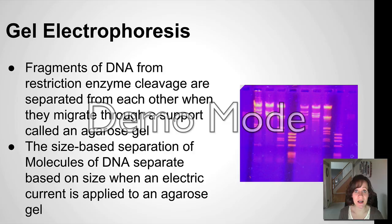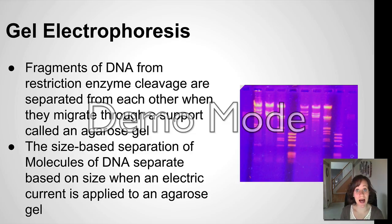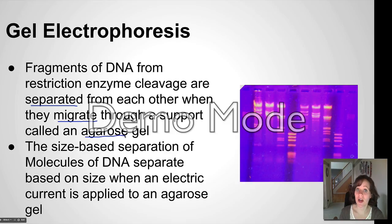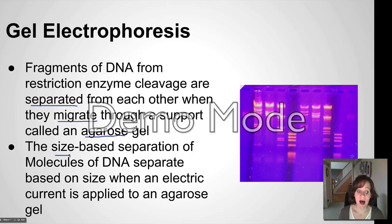Once we cut the DNA, the final step is doing a gel electrophoresis. You're going to be doing a gel electrophoresis lab next week in class. The idea behind gel electrophoresis is that fragments of DNA, after being cut with restriction enzymes, are separated from each other as they migrate through a support gel. The gel is made from a material called agarose. The pieces of DNA are separated based on size — that's a question I have for you on the next slide — and they're also separated based on an electric current.